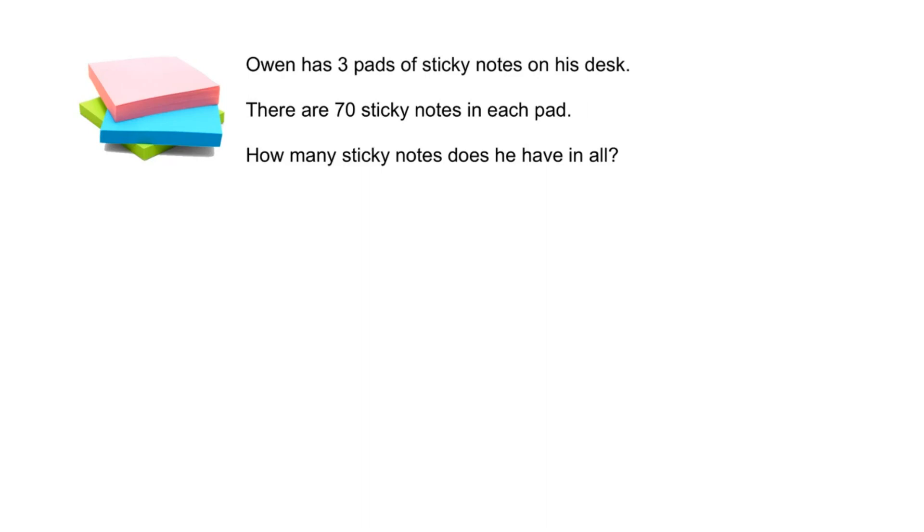Let's look at this problem. Owen has three pads of sticky notes, and each pad has the same number of sticky notes. So we can multiply to find the total. Three groups of 70 means 3 times 70.